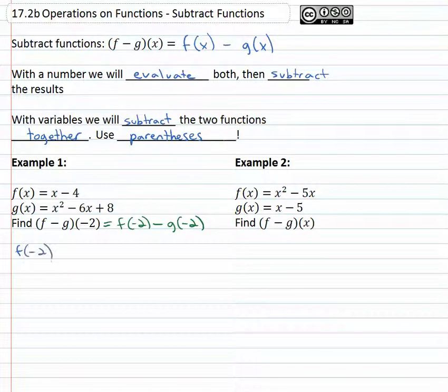We need to find f(−2), which means we're going to plug negative 2 in for x, giving us −2 − 4, which is simply −6.